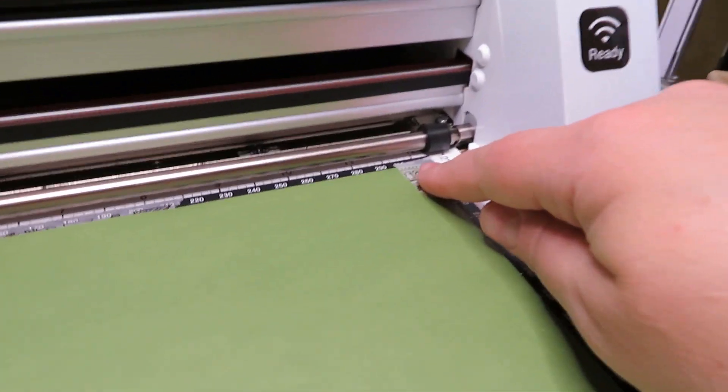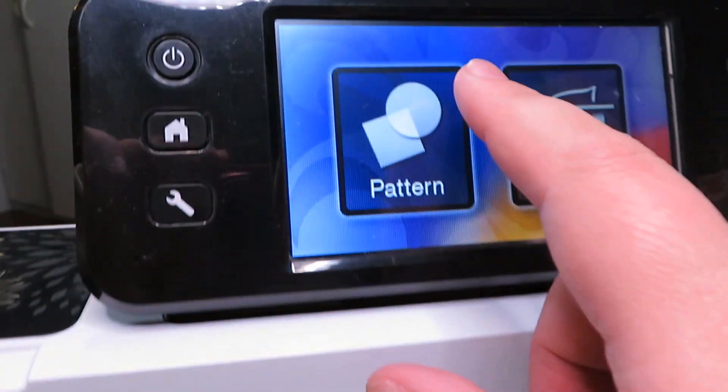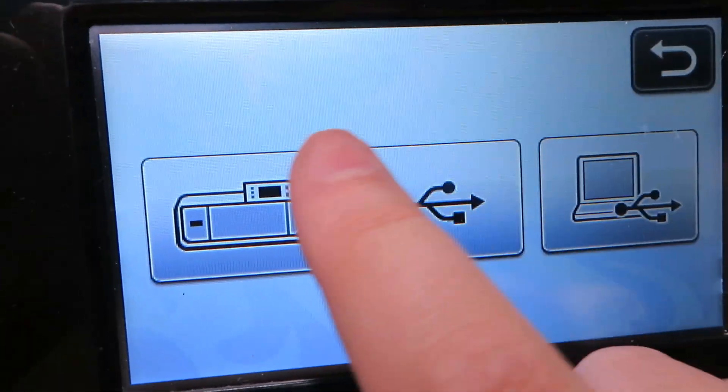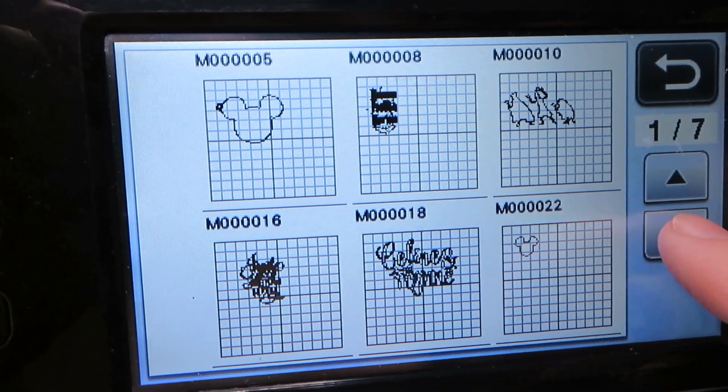I'm going to use the Brother Scan and Cut, and the paper that I'm using is a 12 by 12 cardstock that I bought at Joanne Fabrics quite a long time ago. I absolutely love it. Basically what I did was I have already scanned in the image.